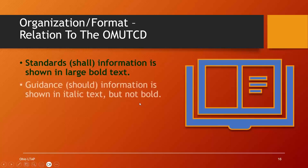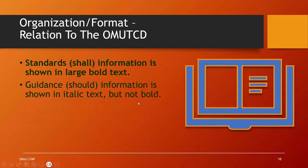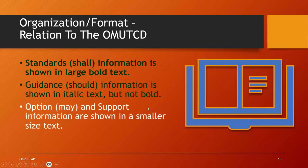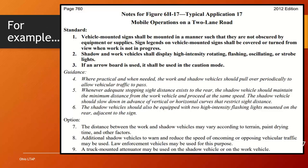On the notes page, standards are written in large bold text, guidance is written in italics, and options and support information are shown in smaller text. Each typical application has a number — one through 46 — and a specific title. Here's a notes page example: typical application number 17, titled 'Mobile Operations on a Two-Lane Road,' which tells you the type of operation and type of road. The standard is a 'shall' condition — when you select this typical application, you must meet the standards, no matter what street you're on.